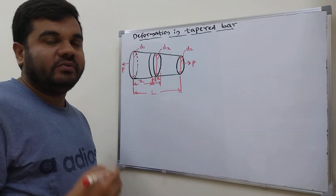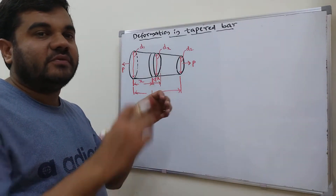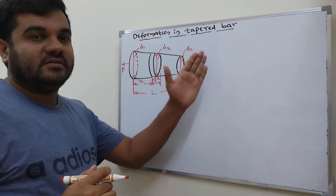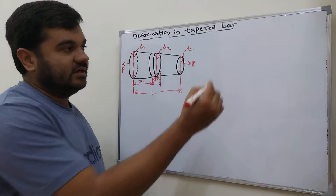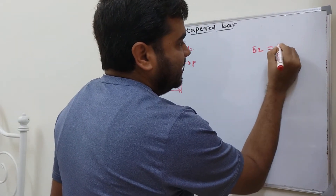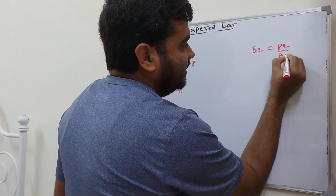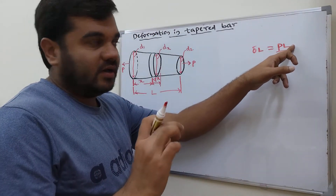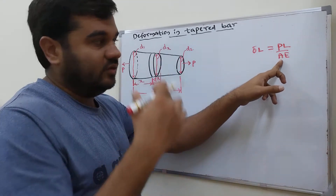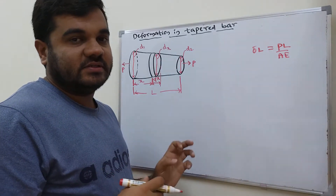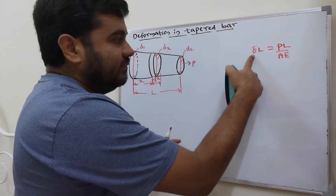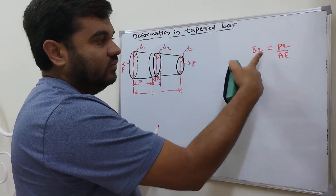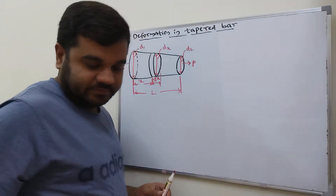In the previous video we derived the deformation for a uniform bar where the diameter is constant. We derived the equation: deformation = PL/AE, where P is the applied tensile load, L is the length of the uniform bar, A is the cross-sectional area, and E is the Young's modulus. In this video we will derive the same for a tapered bar.